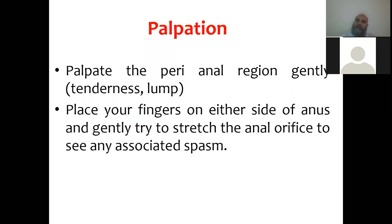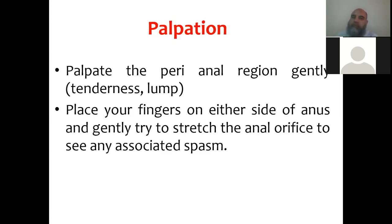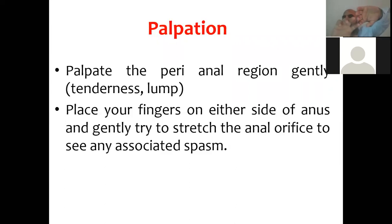After inspection, now palpation — we are still not going inside. We palpate the perianal area. We might feel a swelling or tenderness. If the patient reports pain we may have to abort here, as putting a finger inside will cause more pain. Place your fingers on either side of the anus and try to gently stretch. If there is extreme spasm — for example due to anal fissure — you may appreciate it and it means there is no point in causing more pain.